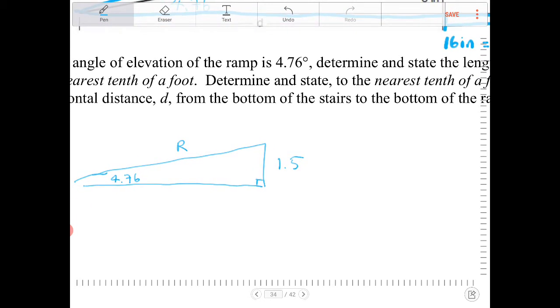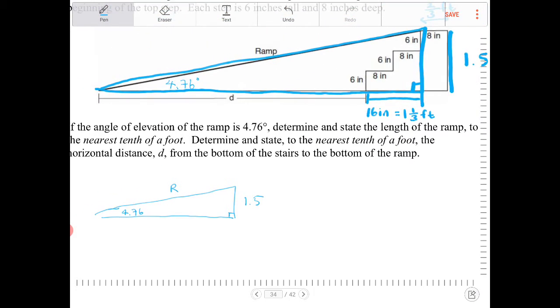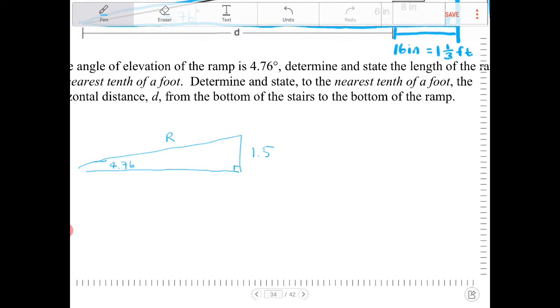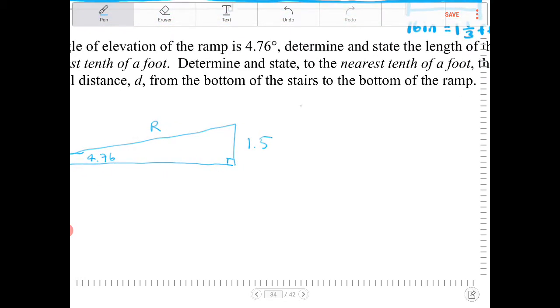So the 1.5 feet, that side there is opposite of 4.76, and the ramp is hypotenuse. So I can use a sine ratio of 4.76 is equal to 1.5 over r.